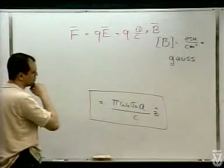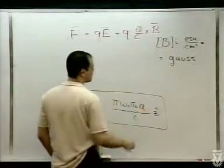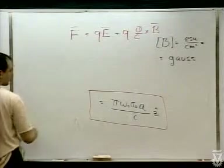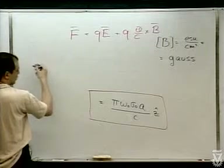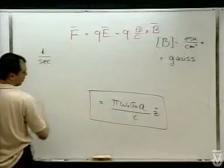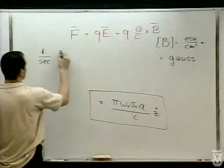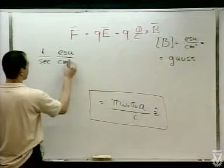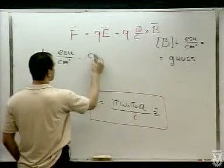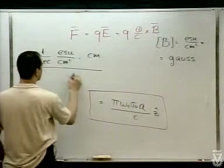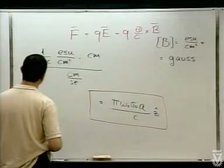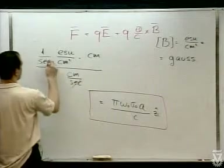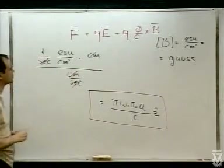אנחנו רוצים לראות שהיחידות יצאו ESU/cm². מה היחידות של אומגה? 1/שנייה. סיגמה-אפס: ESU/cm². R: ס"מ. חלקי ס"מ לשנייה — C. השניות מצטמצמות, הסנטימטרים מצטמצמים, ונשארנו עם ESU/cm². הכל בסדר.